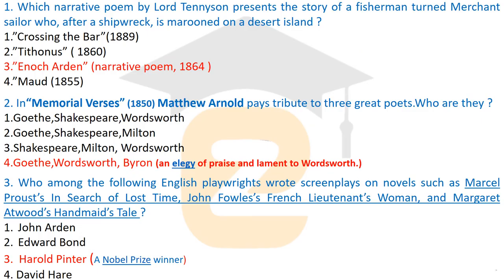The first question: which narrative poem by Lord Tennyson presents the story of a fisherman turned merchant sailor who, after a shipwreck, is marooned on a desert island? The correct answer is 'Enoch Arden,' a narrative poem published in 1864. The main character — also named Enoch Arden — was the fisherman and merchant sailor. Other Tennyson poems mentioned include 'Crossing the Bar' (1889), 'Tithonus' (1860), and 'Maud' (1855).